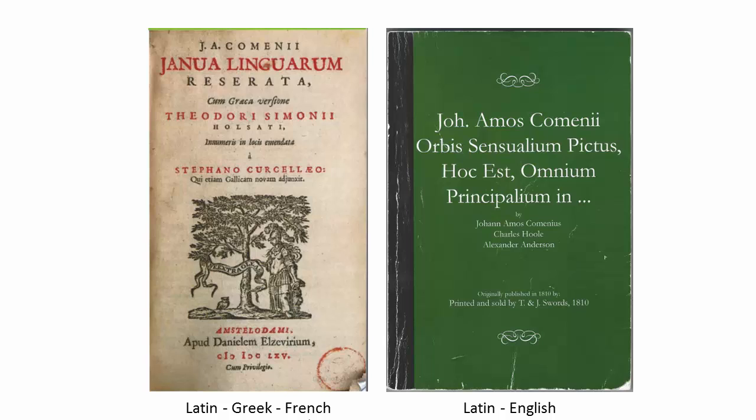Comenius neatly organized the subject matter of these textbooks into exactly 100 hierarchically ordered topics, starting with creation and the cosmos and the classical four elements — earth, water, air, and fire — and moving on to plants, animals, and finally man, his body, his familial relationships, his arts, crafts, and occupations.